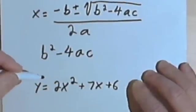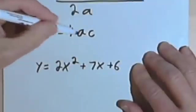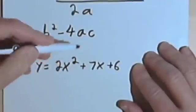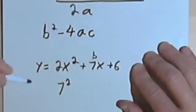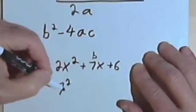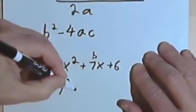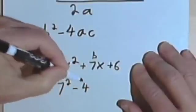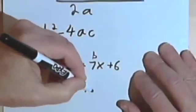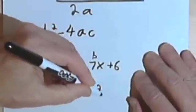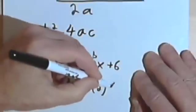So that's in standard form. I could then find what the discriminant is by taking the b, that's 7, so I'd have 7 squared, and multiplying that by negative 4 times the a, which is 2, times the c, which is 6.